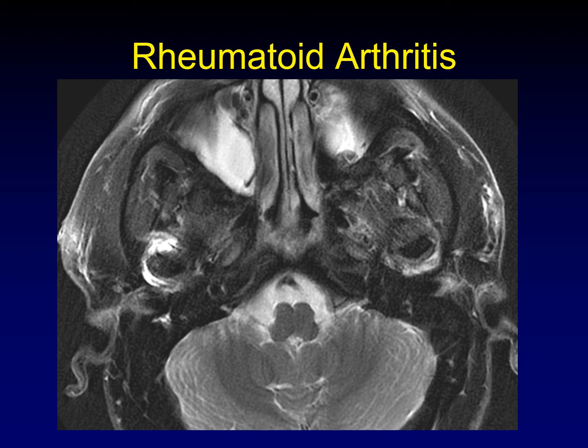Here's the appearance of rheumatoid arthritis on MRI. Effusions are the most evident finding on MRI. Sometimes you can make out the erosions, although they're easier to see on CT.